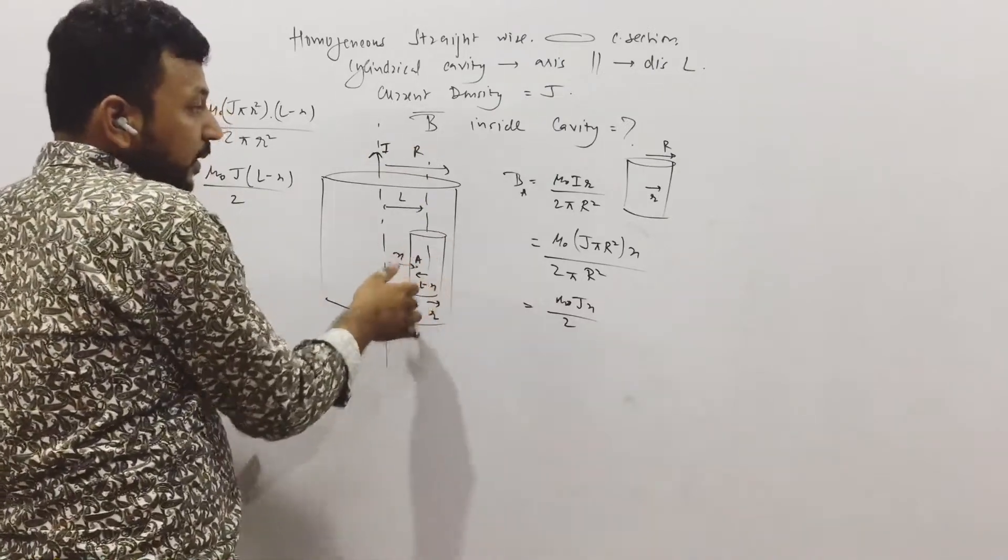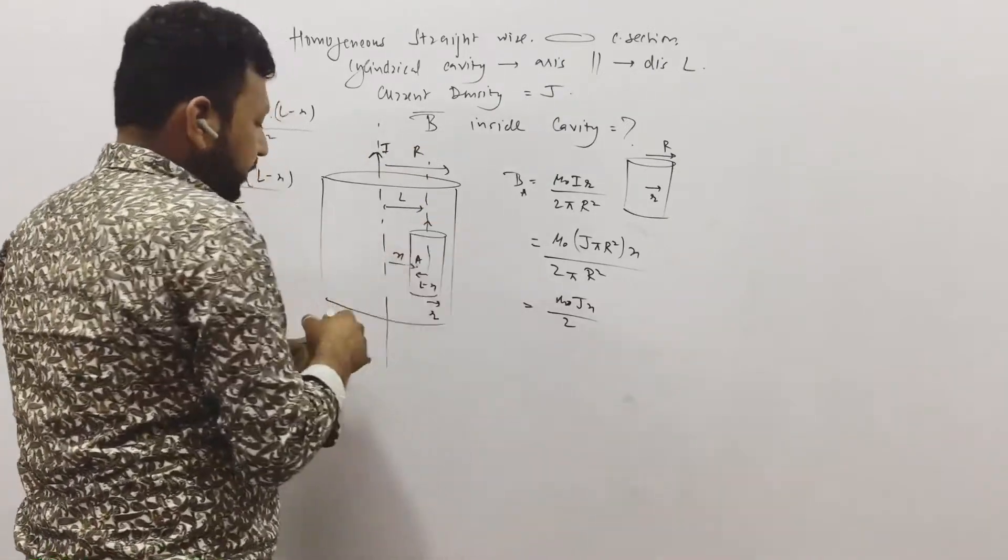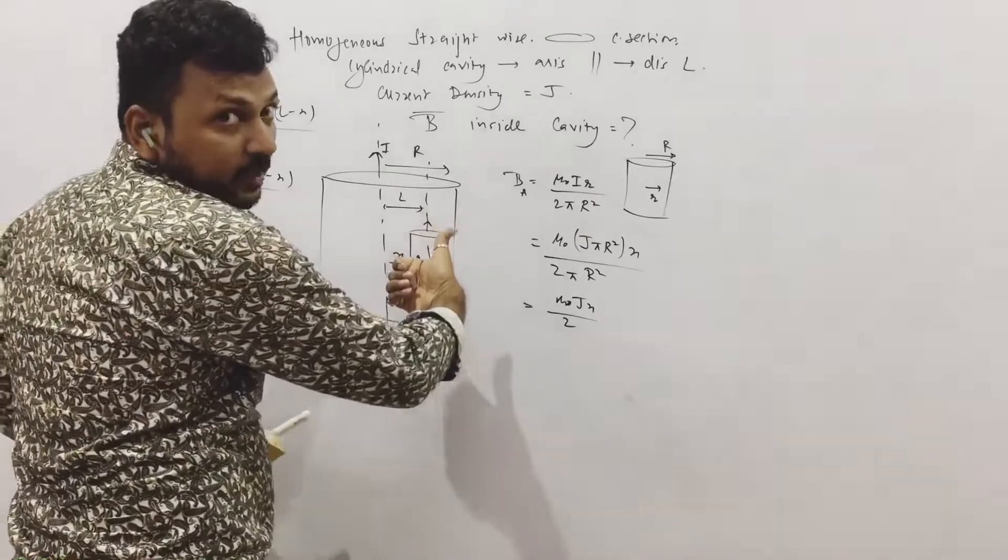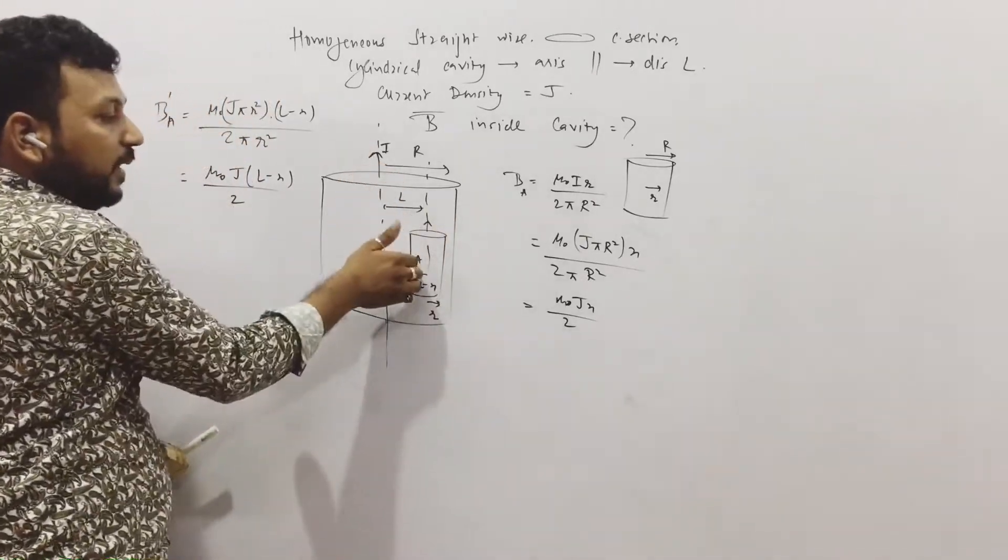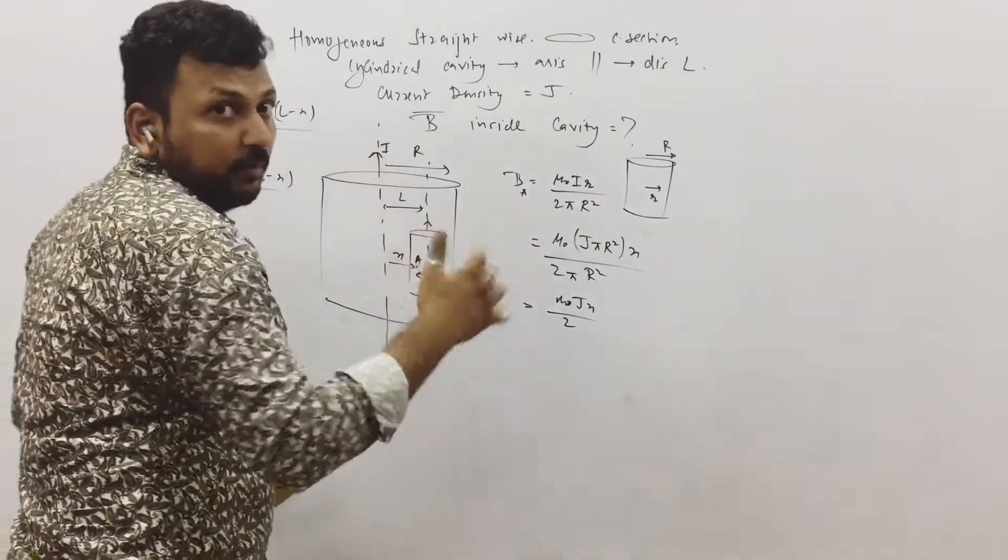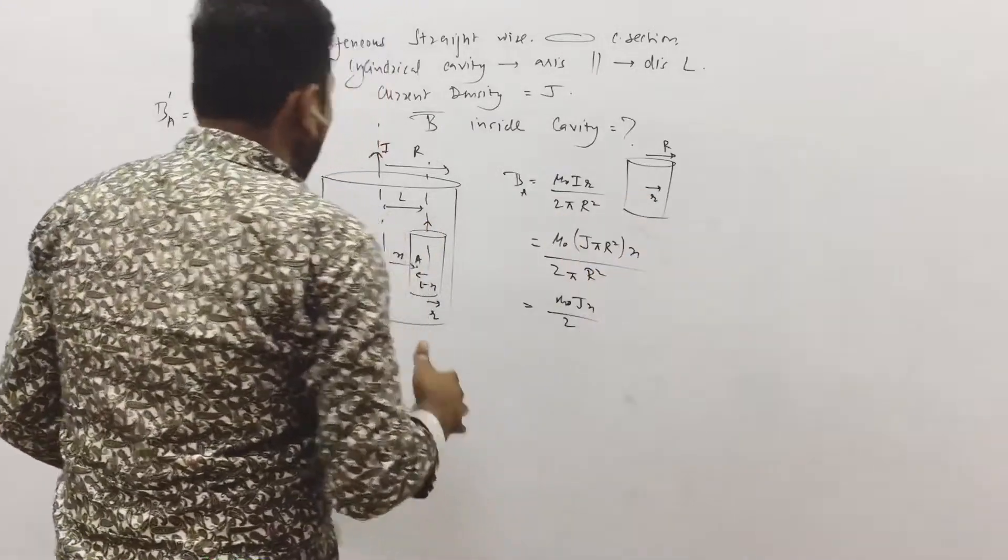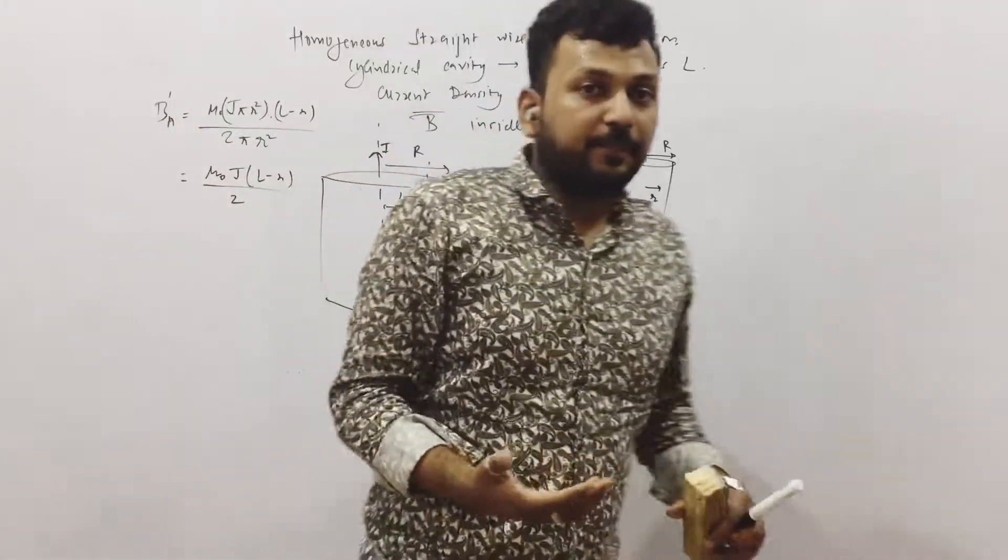But due to this current, it is outside, right? So, this inside and this outside. By the right hand curl rule. Now we have to, what do we have to do? We have to add them.